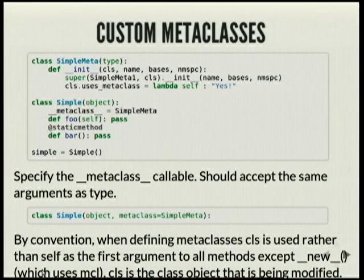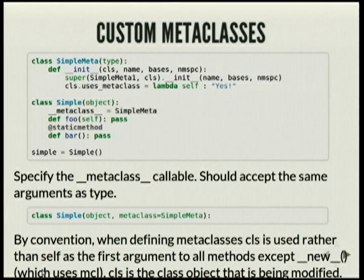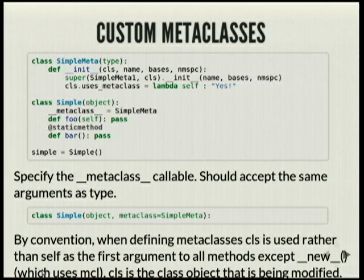By convention, the first argument in metaclass methods is always the class. However, unlike regular classes where methods get the instance as the first argument, in metaclasses the first argument is the actual class itself — except for __new__, whose first argument is the metaclass.